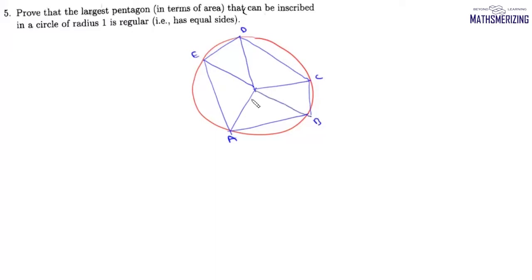Now let these angles be theta one, theta two, theta three, theta four and theta five. Now sum of all the angles, it must be two pi.